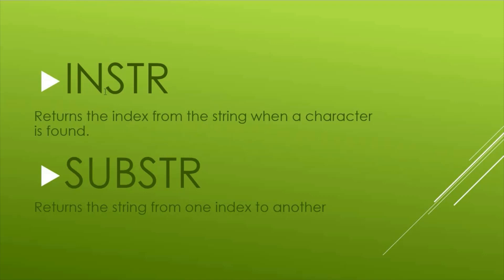INSTR returns the index position from a string when a character is found. For example, if you want to find the delimiter — say a pipe — as soon as it finds the pipe in a string, it returns that index position. SUBSTR returns a substring from a whole string between one index and another, so you pass the index values into that function.